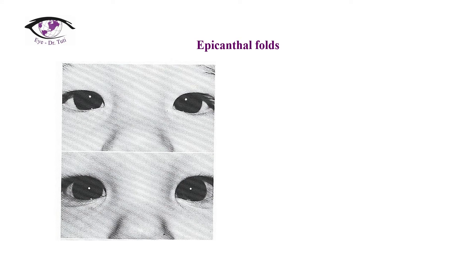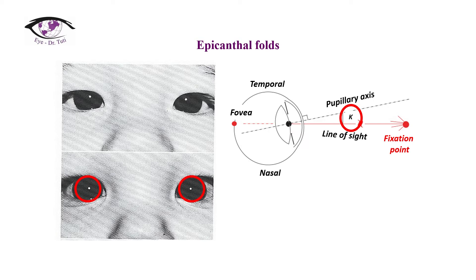Epicanthal folds cover the nasal conjunctiva in both patients shown here, giving the appearance of esotropia. However, the light reflex is centered in the pupil in each case. A large angle kappa could hide a small manifest deviation.